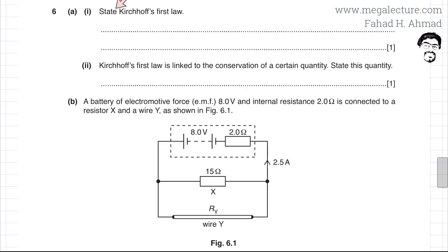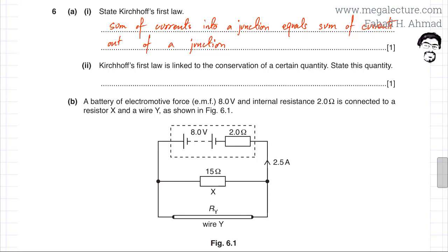The first part of the question states you have to define what Kirchhoff's first law is. The law is defined as the sum of currents into a junction equals the sum of currents out of a junction.